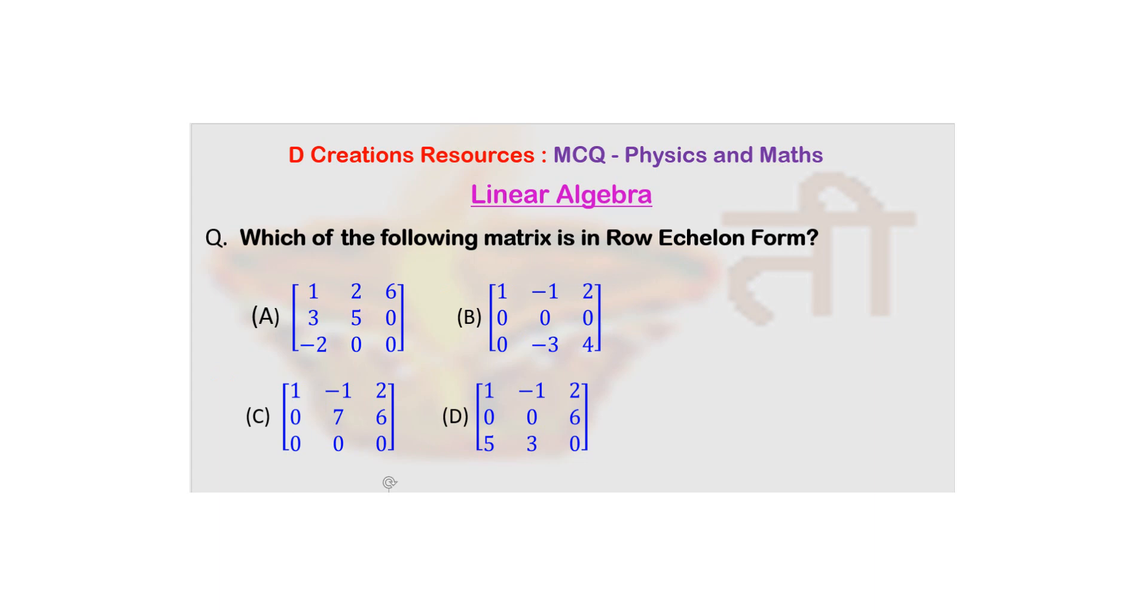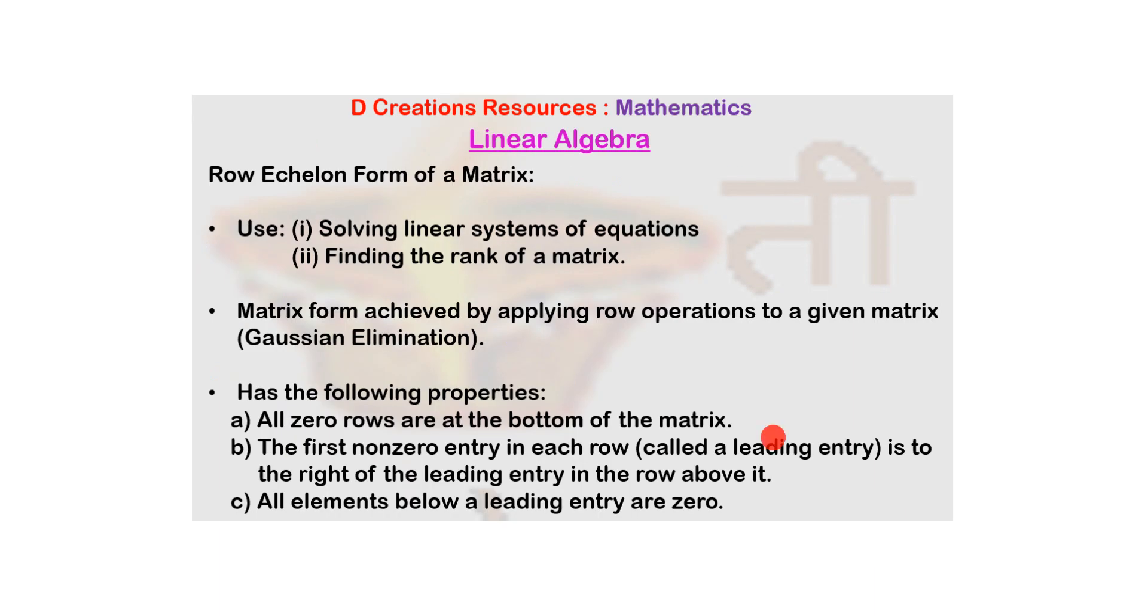Which other condition was there? So we've seen the first condition. The second condition: the first non-zero entry in each row has to be to the right of the leading entry in the row above it. And the last one is all elements below the leading entry need to be zero.